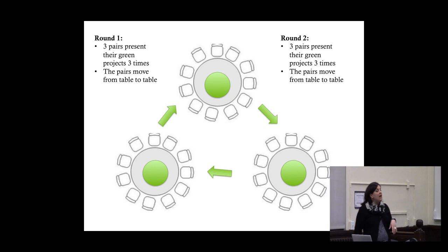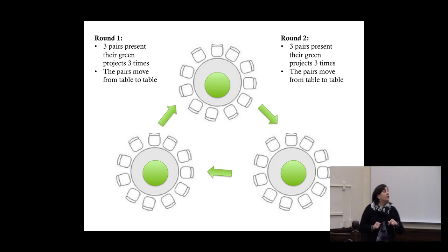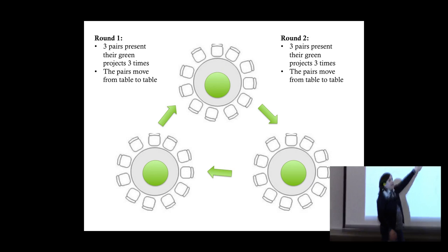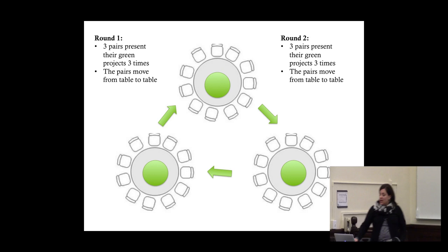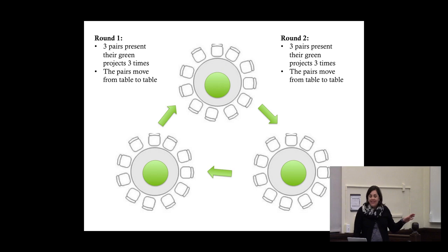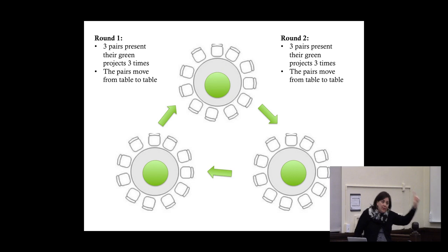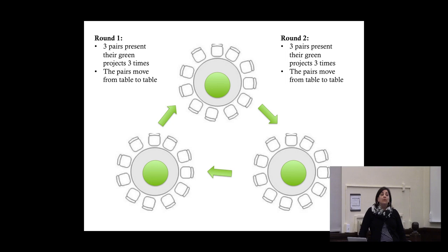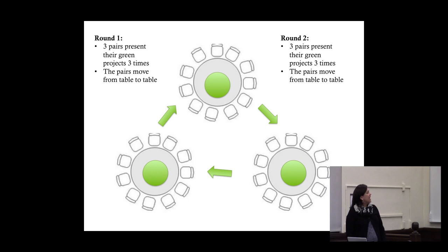The poster day happens on days three and four, the following Wednesday and Thursday, over two 50-minute class periods. Students prepare six-minute poster or PowerPoint presentations detailing their green project: four minutes of explanation and two minutes of Q&A with classmates. The presentations work in a round-robin format: in the first round, three pairs each present their six-minute presentation simultaneously; when done, the presenters rotate to the next table while the rest of the class stays still. Presenters give their presentation three times, then round two brings three new pairs.